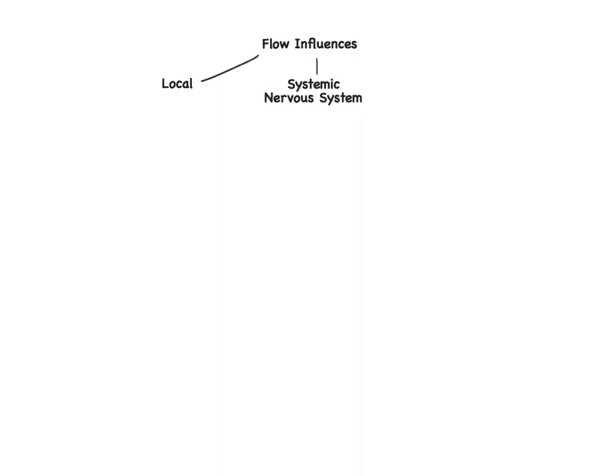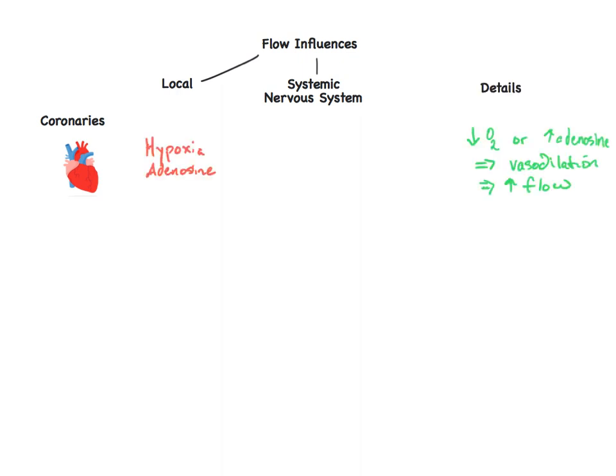We've seen the coronary system before. The local control is incredibly important to flow. Vasodilators, like adenosine and hypoxia, can increase delivery of oxygen to tissues.